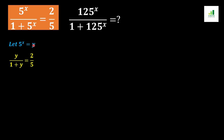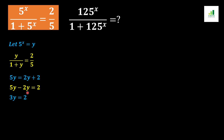Now we simplify this equation. The 5 moves to the other side and multiplies with y to give 5y. The 2 multiplies both values to give 2y plus 2. Moving 2y to the other side gives 5y minus 2y equals 2, which is 3y equals 2. Dividing both sides by 3, we get y equals 2 over 3.